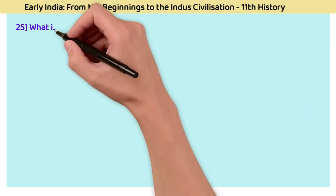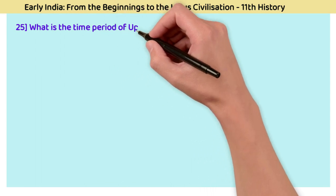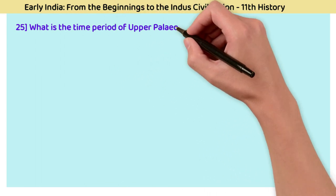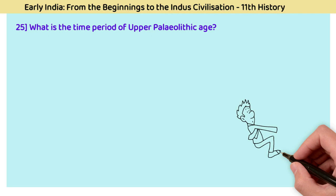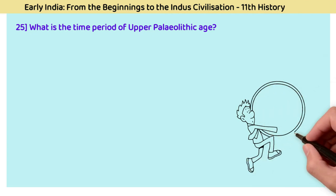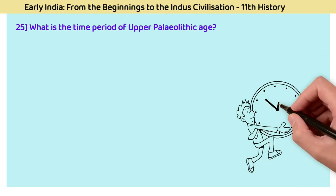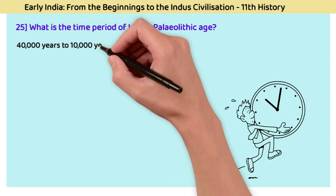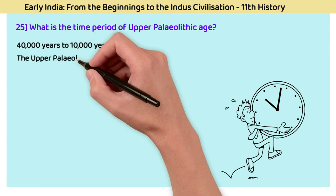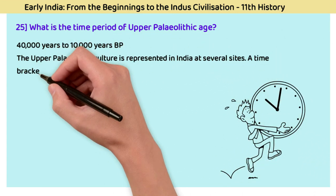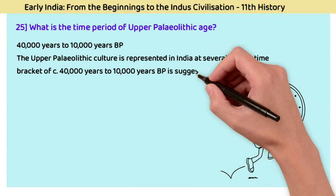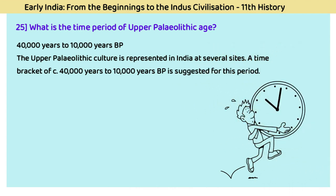Question 25: What is the time period of the Upper Paleolithic Age? The answer is 40,000 years to 10,000 years BP. The Upper Paleolithic culture is represented in India at several sites, with a time bracket of 40,000 years to 10,000 years BP suggested for this period.